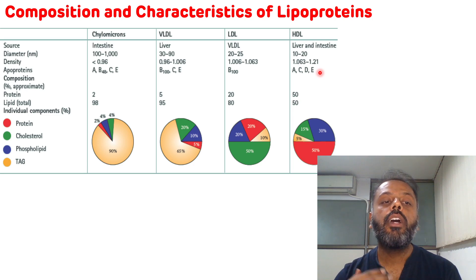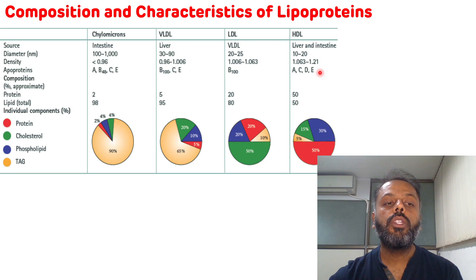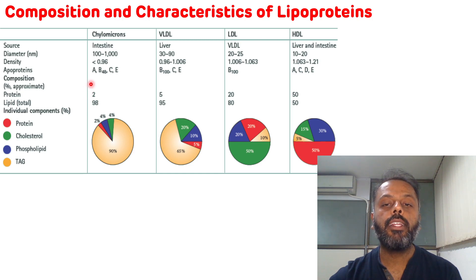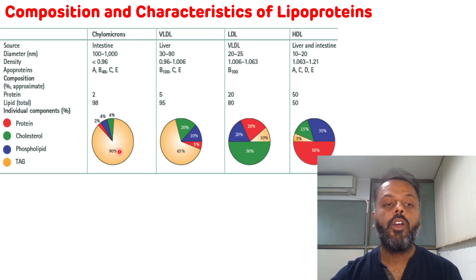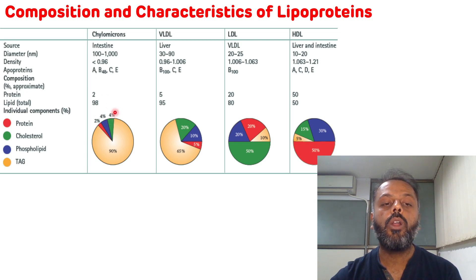Looking at the individual components: chylomicron has a lipid content of around 98% and a very low protein content of 2%. Within the 98% lipid, around 90% is triacylglycerol — so chylomicron contains the highest amount of triacylglycerol. Phospholipid is around 4% and cholesterol is 4%.